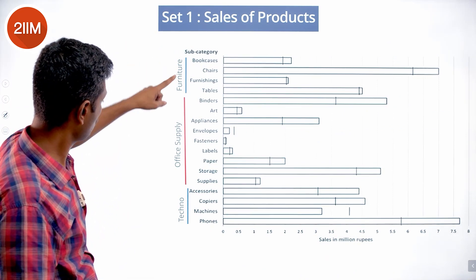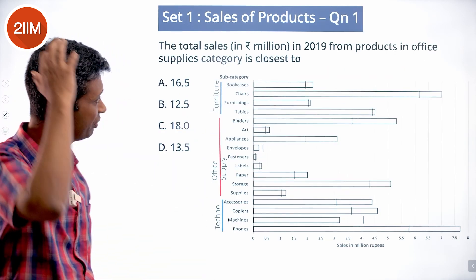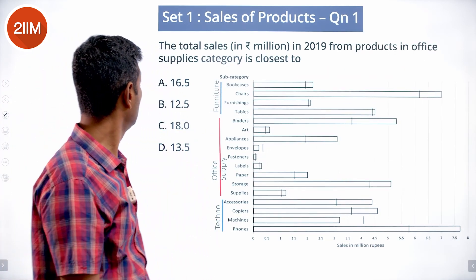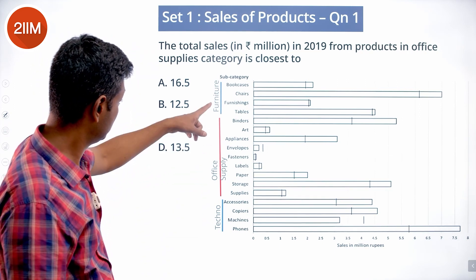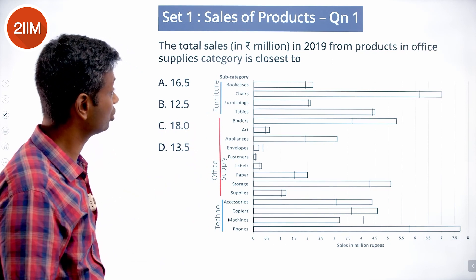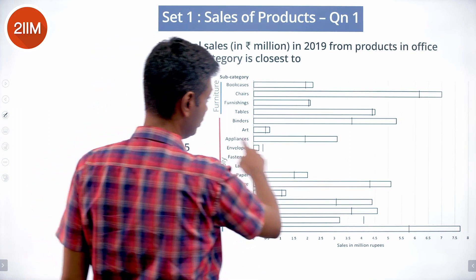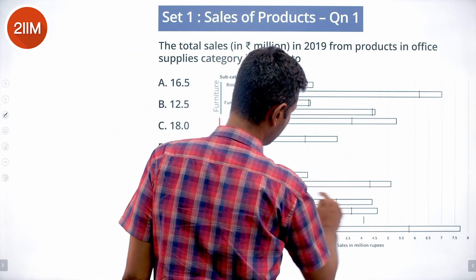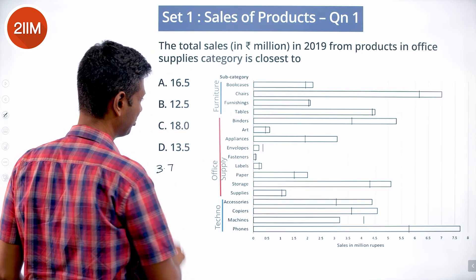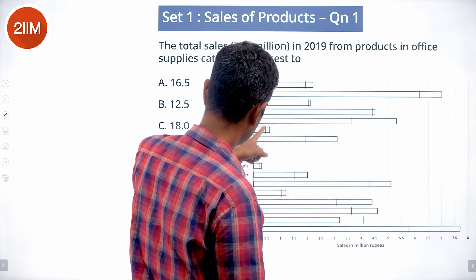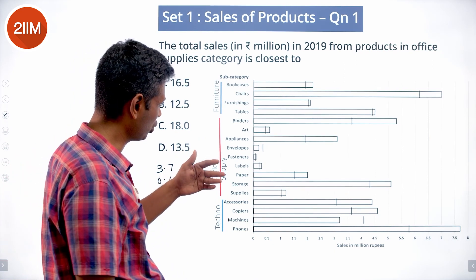Furniture, office supply, technology — straightforward categories, nothing much to figure out, just solving from here. The first question asks for total sales in rupees million of 2019 from the office supply category. We need to add nine different 2019 values. Reading them off: art is about 3.5 to 3.65, appliances maybe a little more than 0.5.